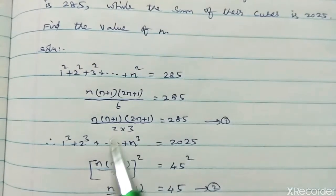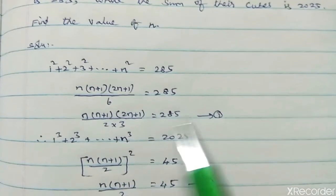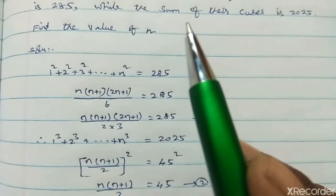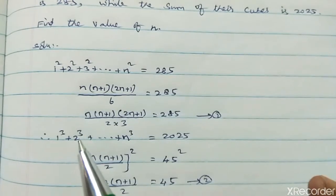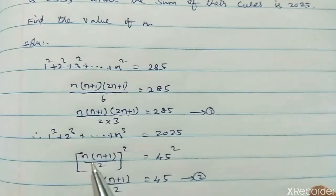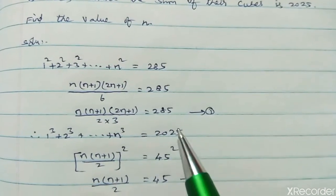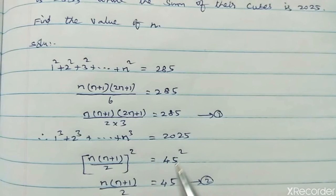Where is the cube? Cube, n into n plus 1 divided by 2 whole square. Sum of their cubes, 1 cube plus 2 cube up to n cube equal to 2025. This is the formula: n into n plus 1 divided by 2 whole square equal to 2025. 45 square.